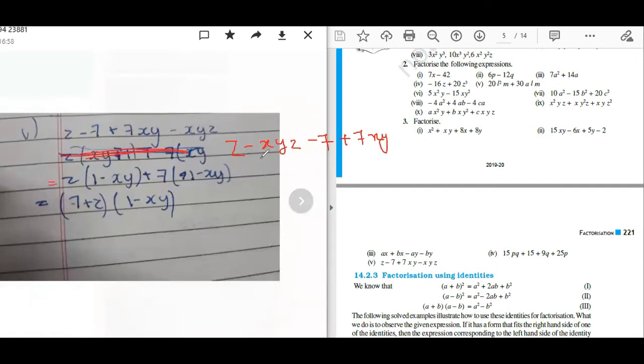You are taking Z as common: 1 minus XY. Then how will you get plus here? Oh sorry sir, minus. It will be minus, na? Yes. Minus 7. That's why minus 7, it will become plus 1. And minus, plus, minus XY. That's why these two brackets are same. Otherwise they won't be same.